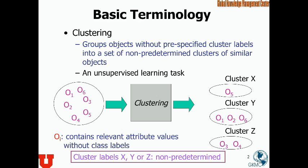Clustering is essentially a process to group objects into groups or clusters. What those clusters mean, or what we mean by the labels of clusters, are not pre-specified. This is something you can already sense is different from classification, where the buckets or classes are pre-specified. Although before clustering, some methods such as K-means will predetermine how many clusters we will group objects into.